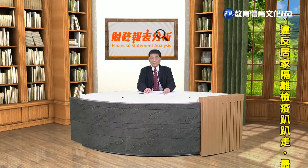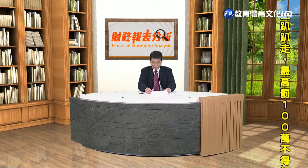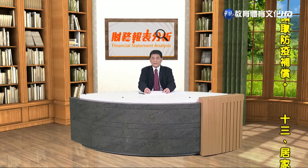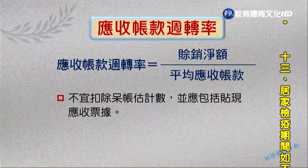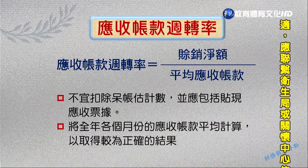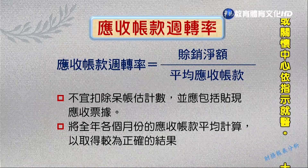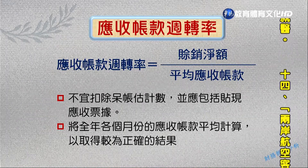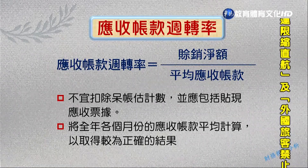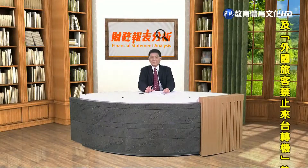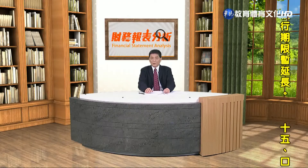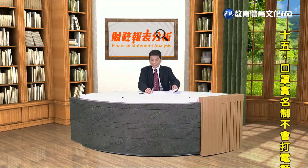所以應收賬款周轉率降低的原因有很多種，分析時要探討降低的原因屬於哪一種。計算應收賬款周轉率時，應收賬款不宜扣除呆帳的估計數，同時應該把貼現的應收票據加回來，因為貼現在會計處理上視同已收現，但其實與銷貨無關。各期應收賬款強調平均觀念，也可以將全年各月份的應收賬款平均計算，即各月餘額加總後除以十二，取得更正確的結果。